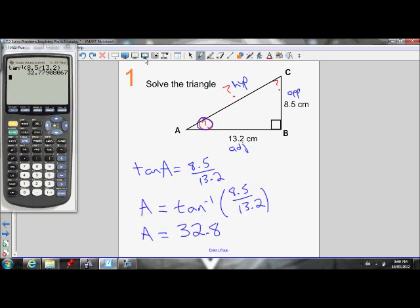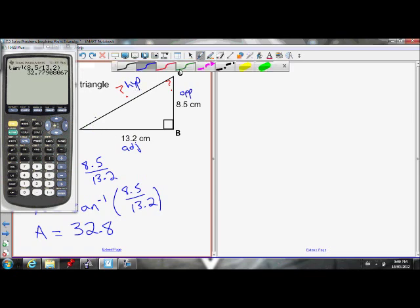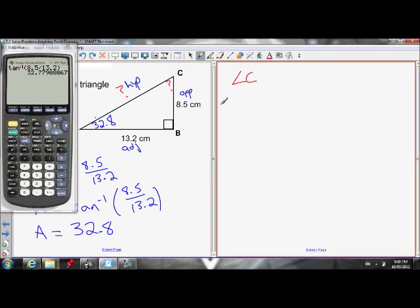Okay, so now if I then want to find, I know one angle. I know my angle right there is 32.8. I can then easily find angle C. Okay, let's do angle C in a different color. So angle C is equal to, I know that all the angles in a triangle add to 180. So I know angle C is equal to 180 minus the other two angles that I know, minus 32.8, minus 90.